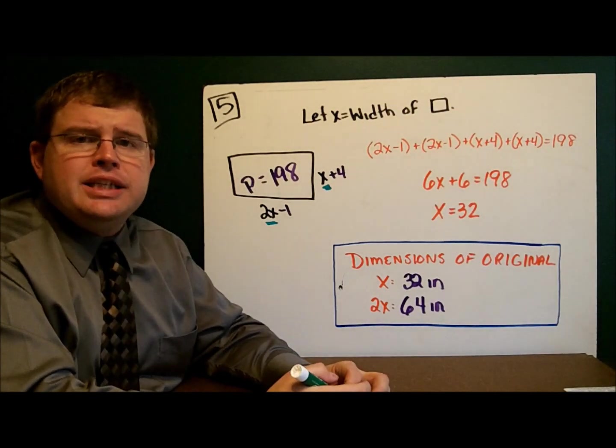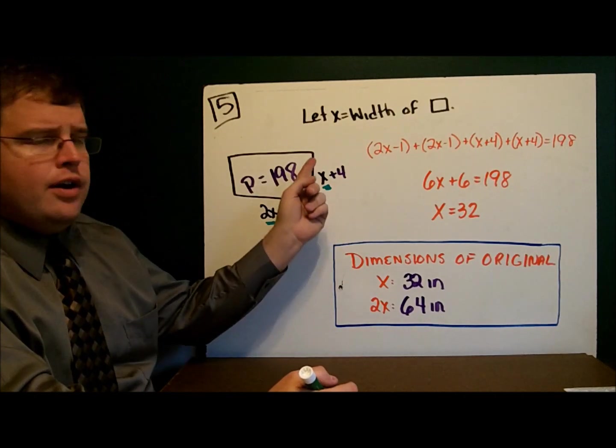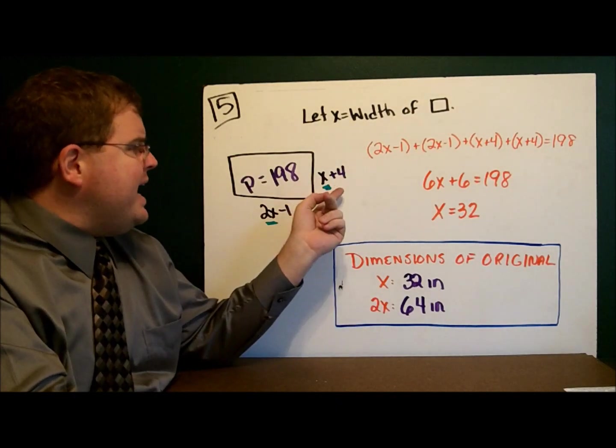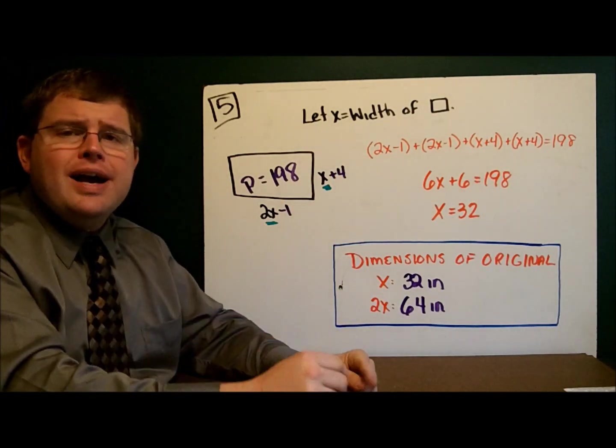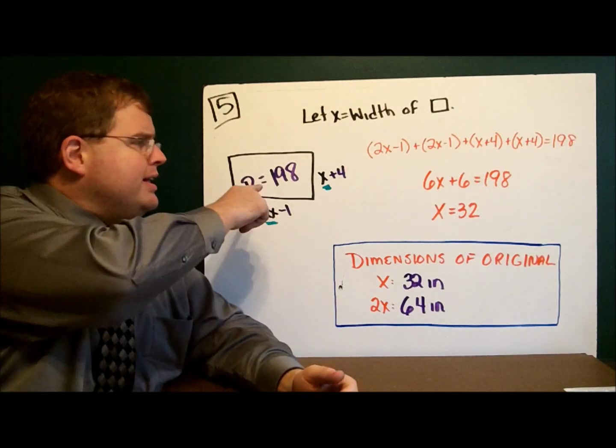But then we went and changed it a little bit. We made this four inches longer and we took one inch away from this side. And so we had x plus 4 here, 2x minus 1. And the perimeter of the new rectangle is 198.